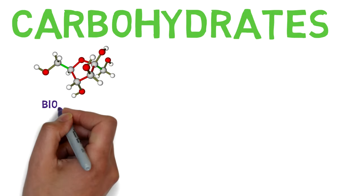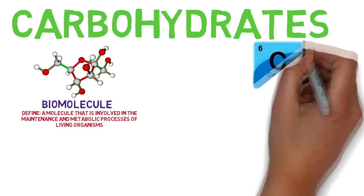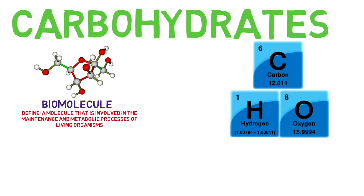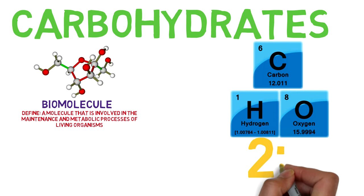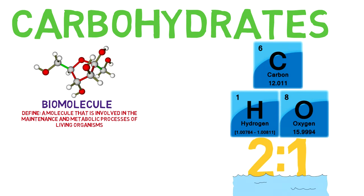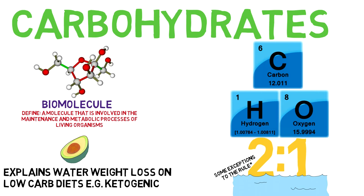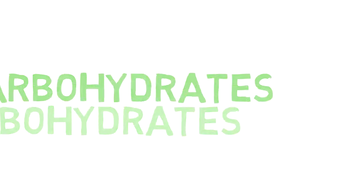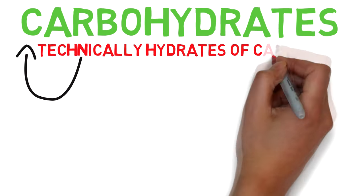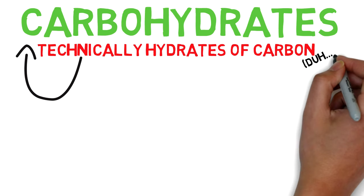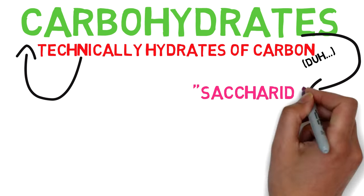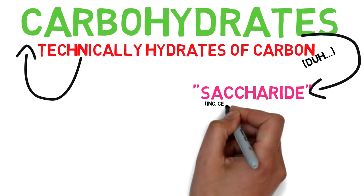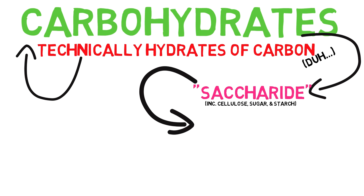A carbohydrate is a biomolecule that is made of carbon, oxygen and hydrogen atoms. The hydrogen and oxygen atoms have a ratio of 2 to 1, much the same as water, albeit with a few exceptions, which may explain the significant water weight loss on low carb diets such as the ketogenic diet within the first few weeks. Technically speaking, carbohydrates are the hydrates of carbon, hence the name. The term carbohydrate is synonymous with saccharide, a group that includes cellulose, sugar and starch.